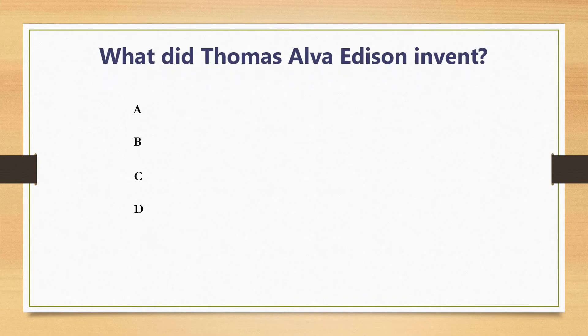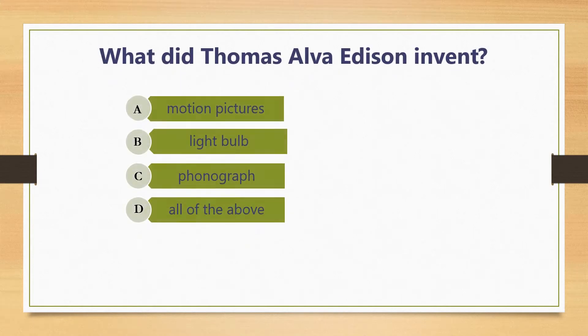What does Thomas Alva Edison invent? A. Motion pictures. B. Light bulbs. C. Photograph. D. All of the above.